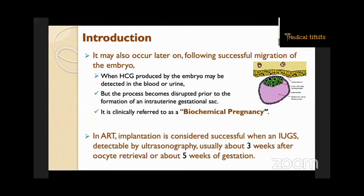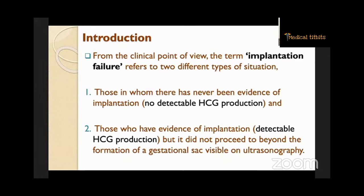From the clinical point of view, the term implantation failure refers to two different types of situation: those in whom there has never been evidence of implantation — that means no detectable HCG production — and those who have evidence of implantation, that is detectable HCG production, but it did not proceed beyond the formation of a gestational sac visible on ultrasonography.